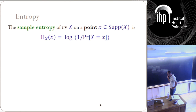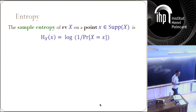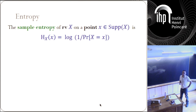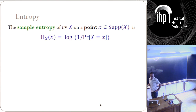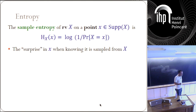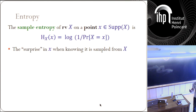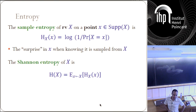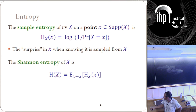So, entropy. I'm going to define entropy by the notion of sample entropy. Given random variable X and the point little x in its support, the sample entropy of X at this point is simply log of 1 over the probability that X equals x. If you want to think about it, it is the log of the surprise in the point x, given that you know it is drawn from X. Then the well-known Shannon entropy for a random variable is simply the expectation over the sample entropy — the expectation over x of the sample entropy of this point.